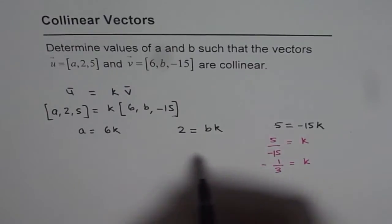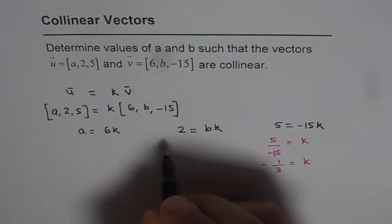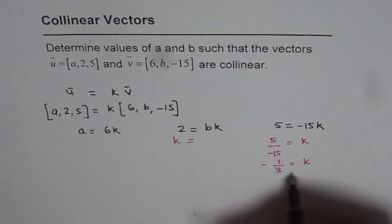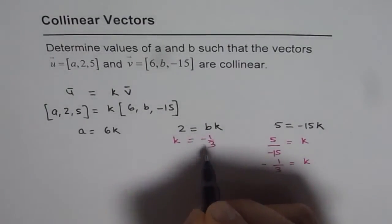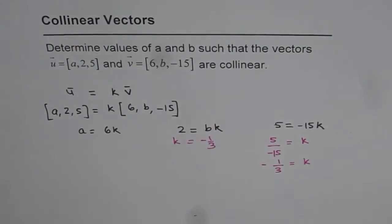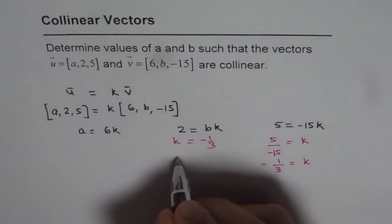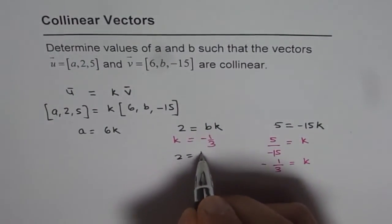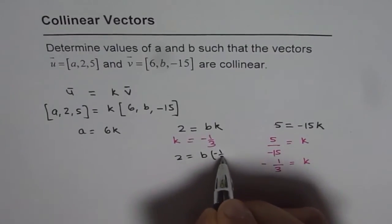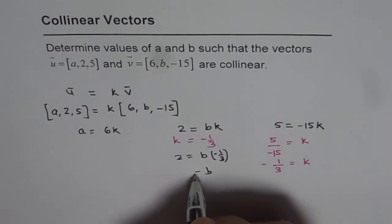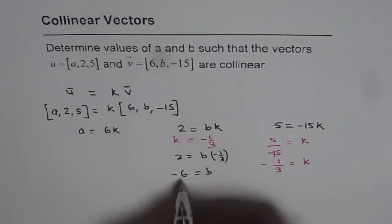So let us substitute this value of k here to find the unknown. We know k equals -1/3. Since we know k is -1/3, we can say 2 equals b times -1/3, or b equals -6.